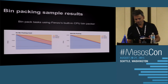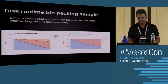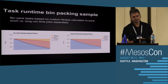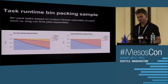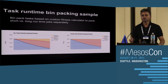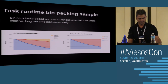Bin packing can be done not only based on CPU usage but also by runtime type. Without a runtime-type bin packer, hosts had a mix of long-running and short-running tasks. With the bin packer, every host had either all long-running or all short-running tasks, which makes it much easier to shut down hosts when batch jobs complete.